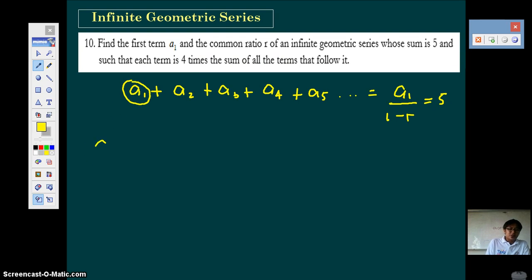There's also a condition in the problem that says the first term, that each term is 4 times the sum of all the terms that follow it. So take the case of this term, the first term, which is equal to 4 times the sum of all the terms that follow it. So notice that this is also an infinite geometric series wherein this is your first term.